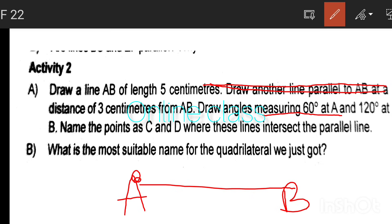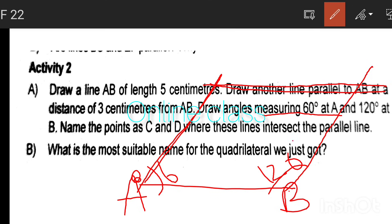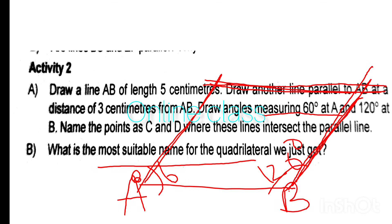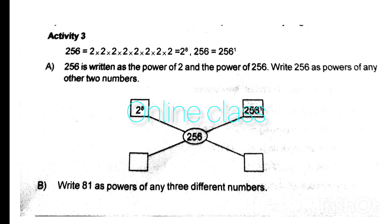Draw a protractor at A and draw the 60-degree angle. Name the points C and D where the lines intersect. From point B, drop a line parallel to AB. The most suitable name for the quadrilateral just formed is a Parallelogram.